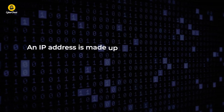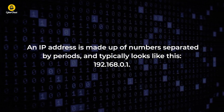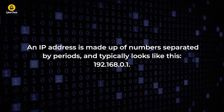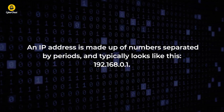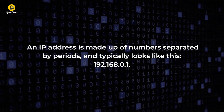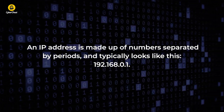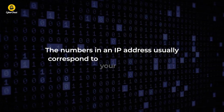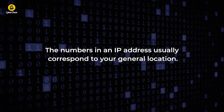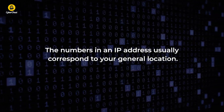An IP address is made up of numbers separated by periods and typically looks like this: 192.168.0.1. The numbers in an IP address usually correspond to your general location.